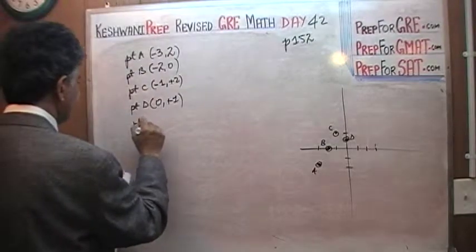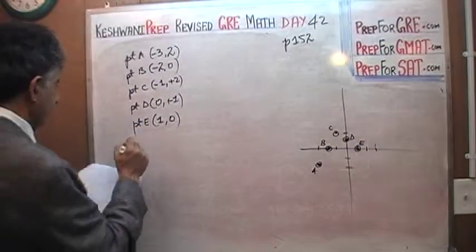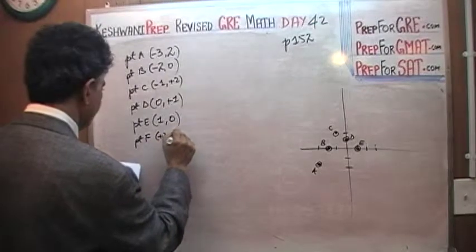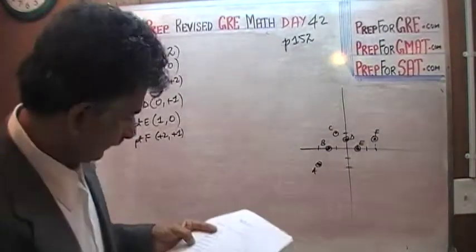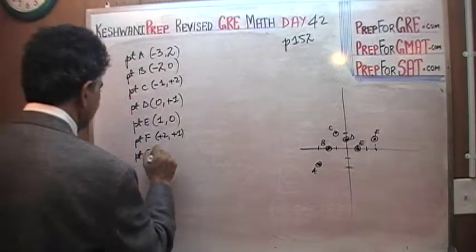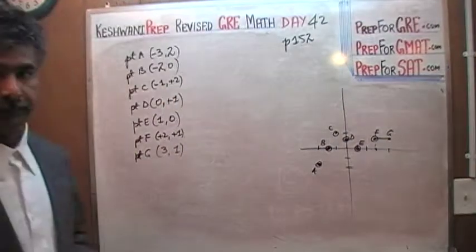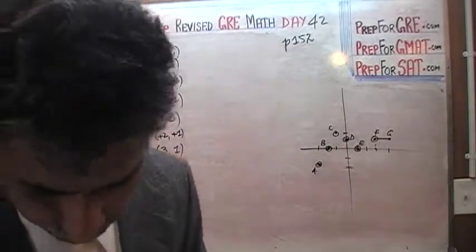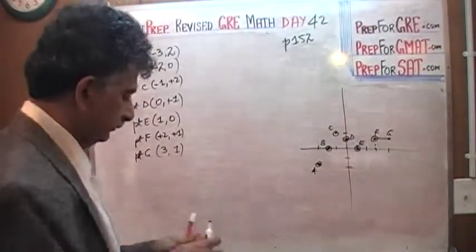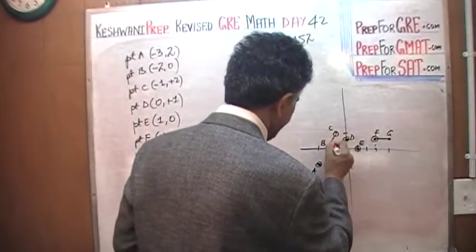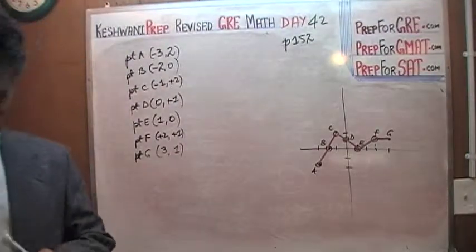Then we have point D, which is 0 and positive 1 — so x is 0 and y is positive 1. It comes down — point D. Then we have point E, which is positive 1 and 0 — x is 1 and y is 0, it crosses the x-axis at point E. Then we have point F, which is 2 and positive 1 — it goes up again. And then we have point G, which is 3 and 1 — it looks like it stays flat. Let's join these points so we can see the shape of the graph that is emerging, and then and only then we will be able to answer the question.